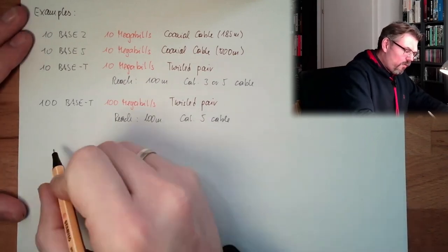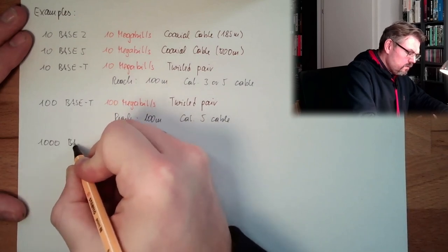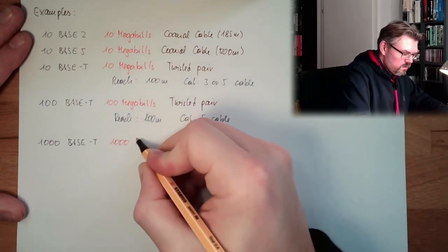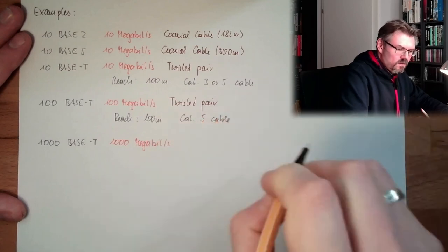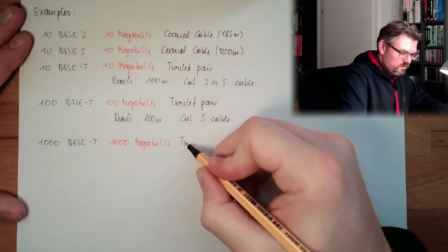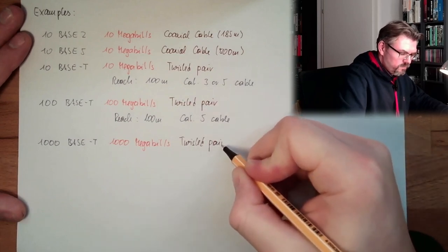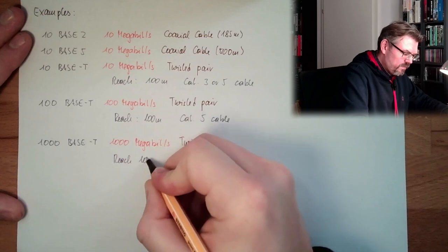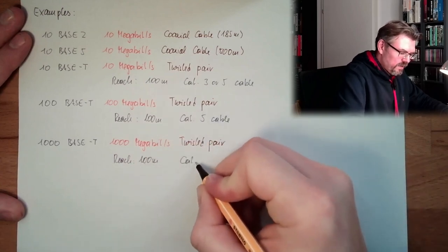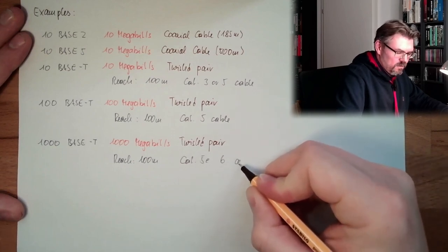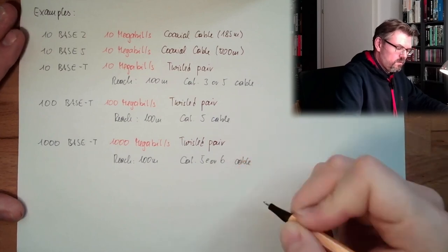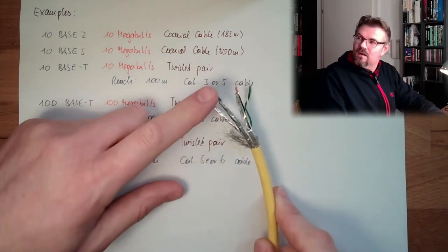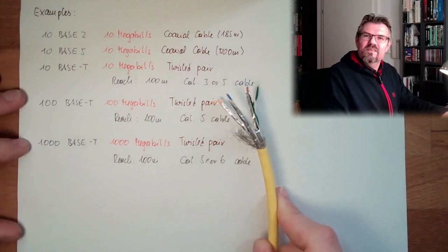Then nowadays in use is the 1000BaseT. So we have here 1000 megabit per second. We are still on twisted pair. We have still a reach of 100 meters per segment. And here we need at least category 5e or 6 cable. So this cable I've shown you, where everything is shielded and so on. This here, this would be sufficient for gigabit Ethernet. It's also called gigabit Ethernet.